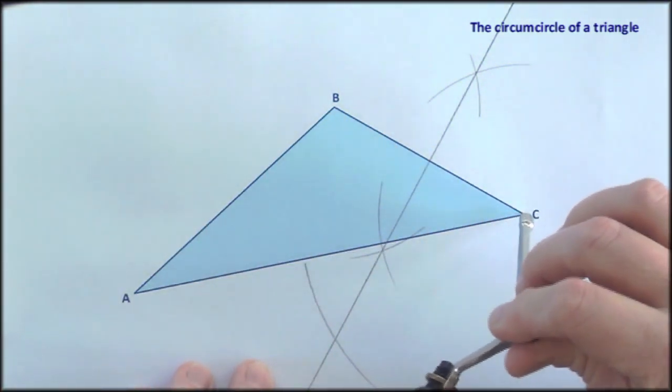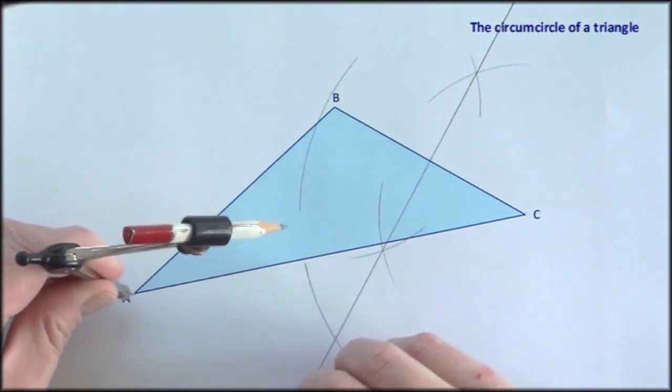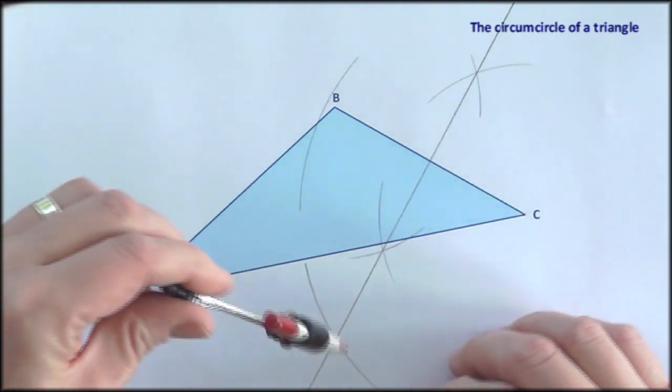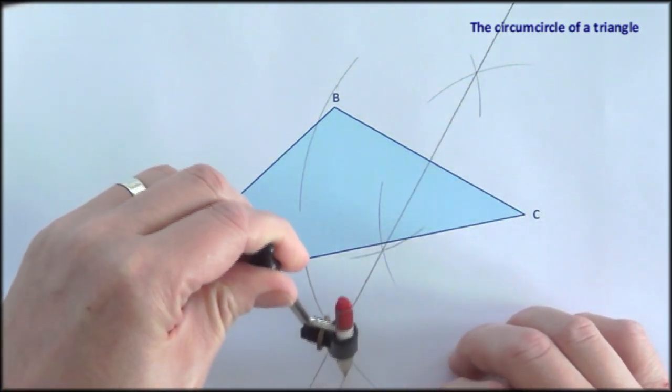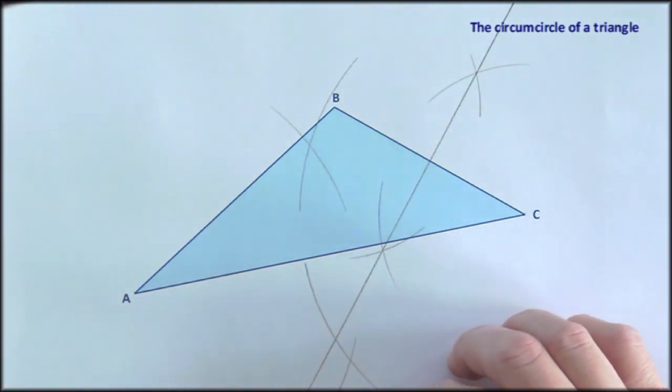Arc below, arc above and point on to A, intercept there, and there. Let's draw the bisector.